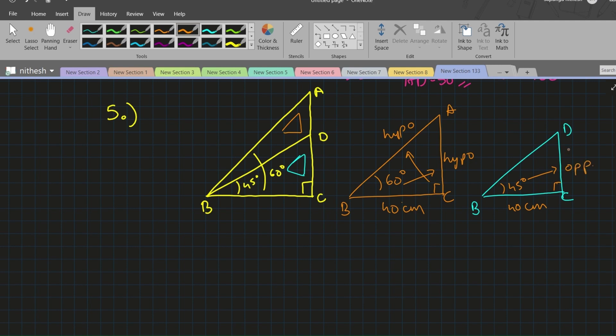Opposite to 45 degrees will be opposite. Just to make it clear, over here this is opposite. So opposite of 60 degrees will be opposite, opposite of 90 degrees will be hypotenuse. Now we will solve this sum. This will be adjacent over here.